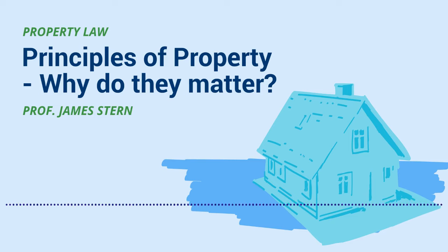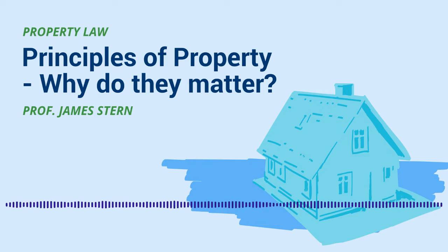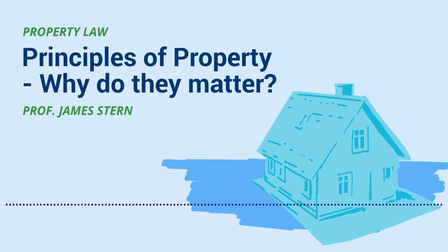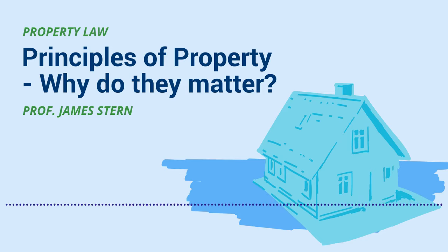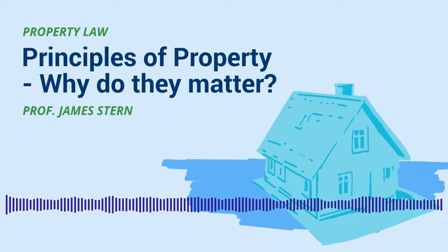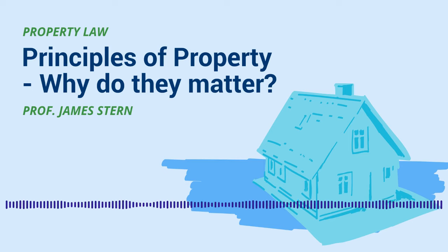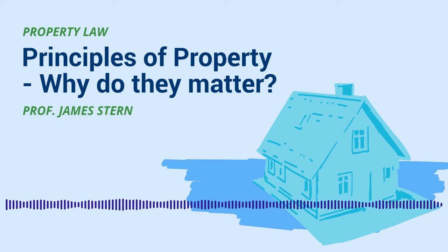As opposed to rights you have against the government, or the mechanics of criminal law, or civil procedure. So you have contract, property, and torts — and there's also a fourth smaller piece, which is unjust enrichment, which gets a lot of attention elsewhere in the world but less so in the United States. Property presents particular problems that you don't see in basic torts or contracts, having to do with the way that different rights interact.